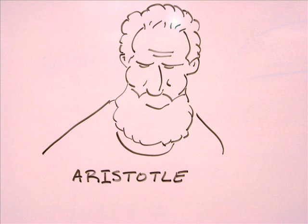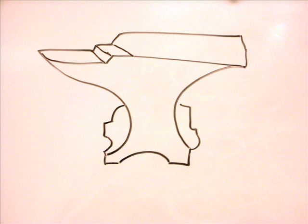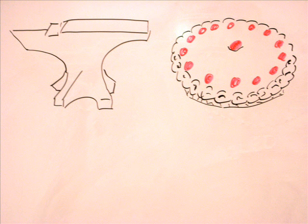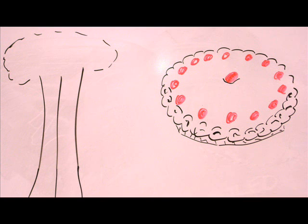One of his ideas was that if two objects of different weights, for example, an anvil and a million dollar pie, were dropped from the same height, then the heavier object would fall faster.